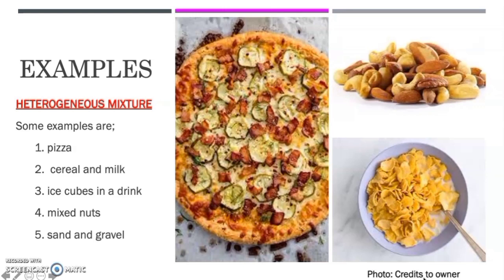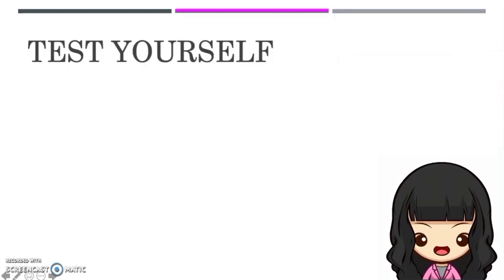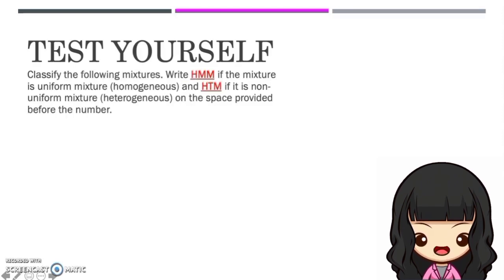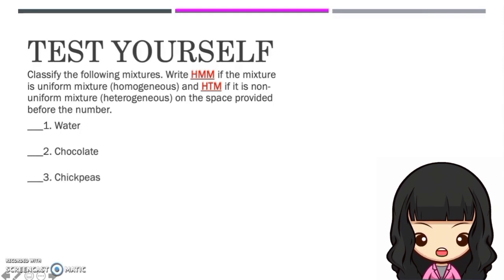We are almost finished with our lesson, but before that, let's test yourself and answer this activity. You have to classify the following mixtures and write HMM if the mixture is uniform or homogeneous, and HTM if it is a non-uniform or heterogeneous mixture. Number one: Water. Number two: Chocolate. Number three: Chickpeas. Number four: Maggi noodle soup. Number five: Ice cubes and cola. Number six: Cologne.